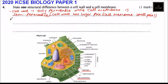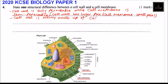Another difference you can mention is that the cell wall is mainly made up of cellulose — that is, it is fiber. If you write this one it's okay: cell wall is mainly made up of cellulose.